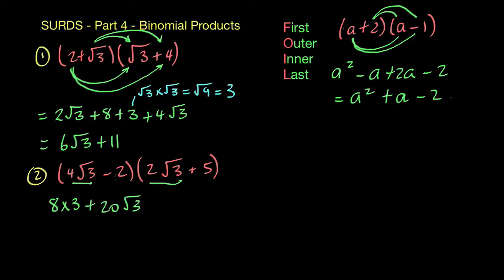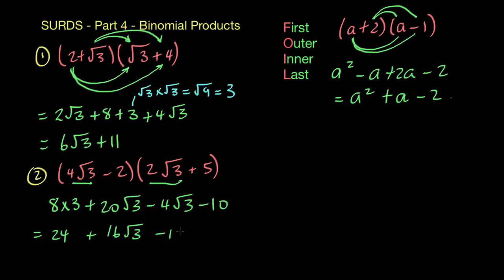Then we have minus 2 times 2 root 3 — just those coefficients multiply together, carrying the minus — so you get minus 4 root 3. Then minus 2 times plus 5 gives you minus 10. So that's equal to 24, plus 20 root 3 take away 4 root 3, which gives 16 root 3, and 24 take away 10 is 14. So the answer is 14 plus 16 root 3.